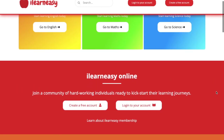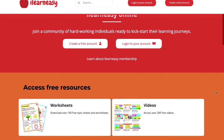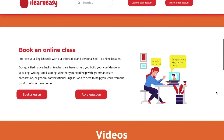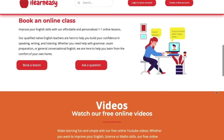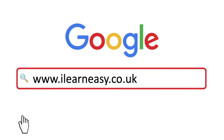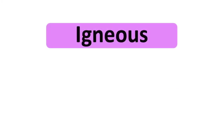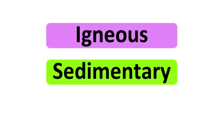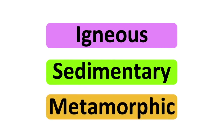To access free topic sheets, worksheets, or to book an online class, visit ilearneasy.co.uk. There are three types of rocks: igneous rocks, sedimentary rocks, and metamorphic rocks. These rocks are all formed in different ways.